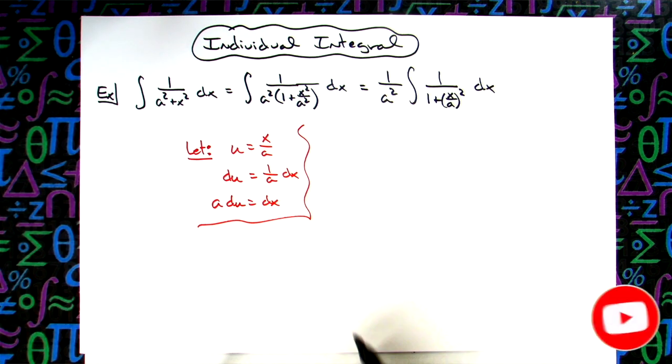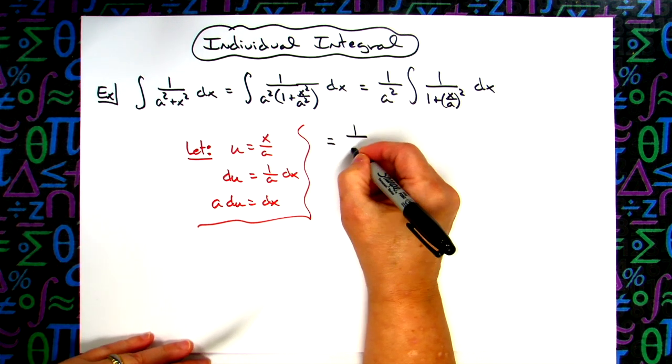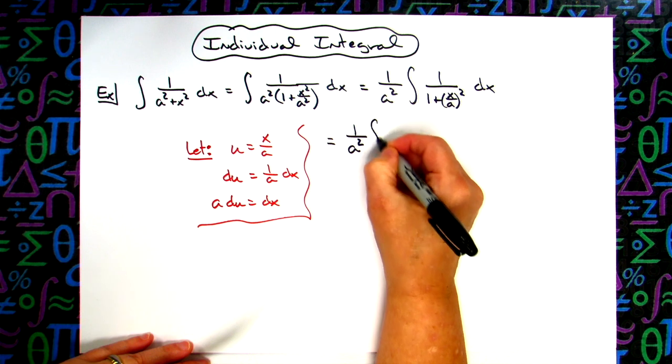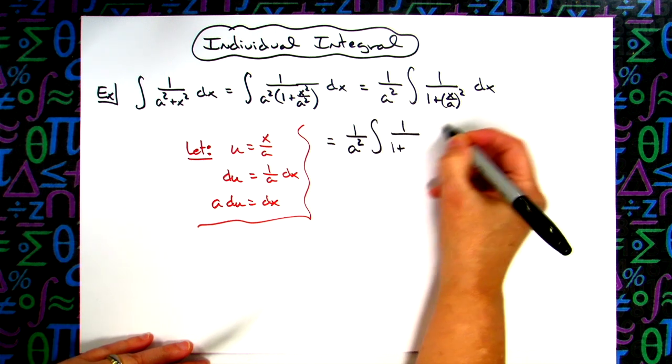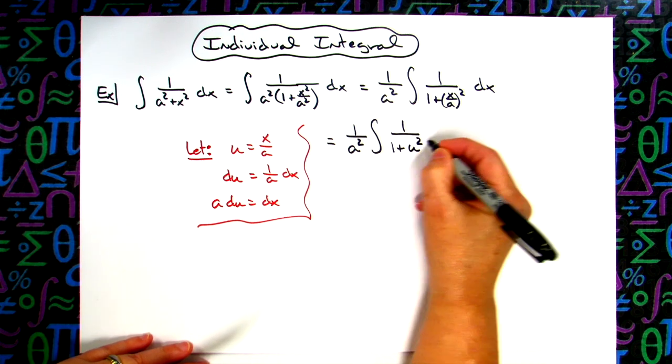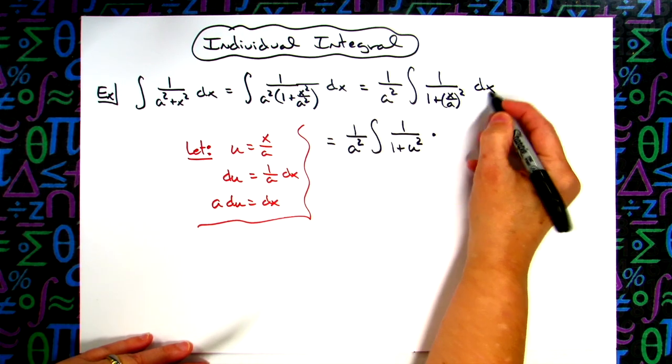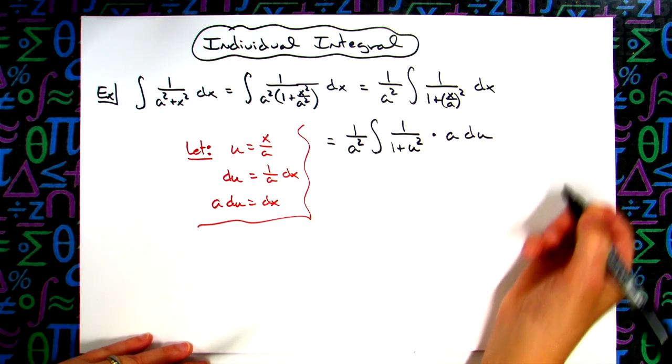All right, then I'm going to come back up here to the original integral and do some substitutions. We'll have the 1 over a squared, which will still be there. Integral of 1 over 1 plus, we'll replace x over a with u, make it u squared, and replace dx with what it equals, a du.